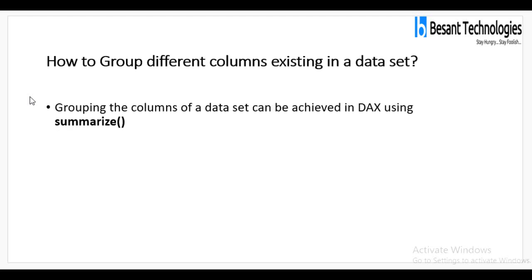How to group different columns existing in a dataset? Grouping the columns of a dataset can be achieved using SUMMARIZE. For instance, if you have a column with many states — for example, in the south region we have Tamil Nadu, Kerala, Karnataka, Telangana, and Andhra Pradesh — you can use the SUMMARIZE function to group them based on a particular region.